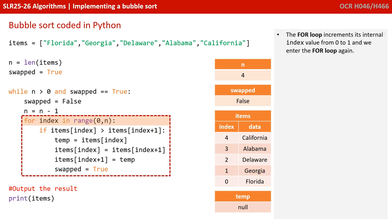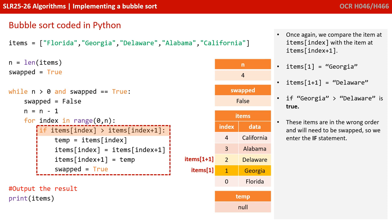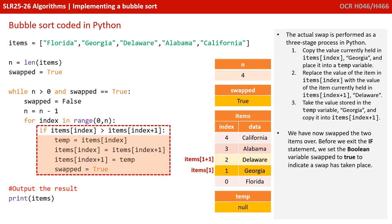The for loop increments its internal index from 0 to 1 and we enter the for loop again. This time, items[1] is Georgia and items[2] is Delaware. Is Georgia greater than Delaware? That's true — these items are in the wrong order, so they need to be swapped. We enter the if statement. The actual swap is performed as a three-stage process in Python: we copy the value in items[index] — that's Georgia — into a temporary variable; we replace items[index] with items[index + 1], which is Delaware; and we copy the temporary variable — Georgia — into items[index + 1]. We've now swapped the two items. Before we exit the if statement, we set the boolean variable swap to true to indicate that a swap has taken place.